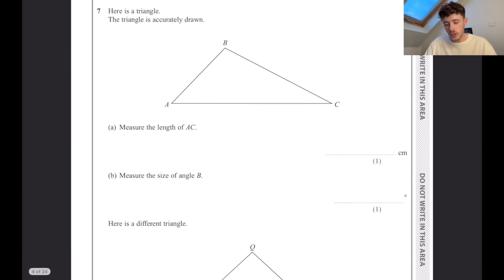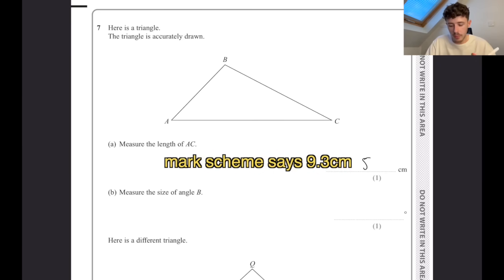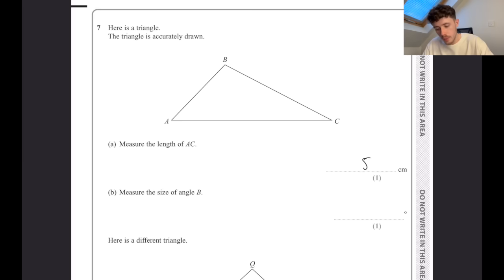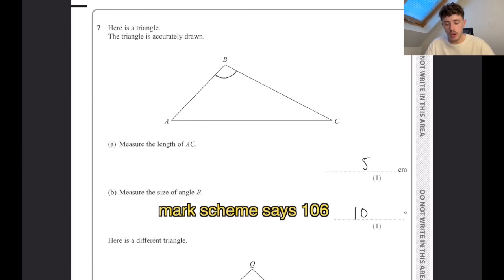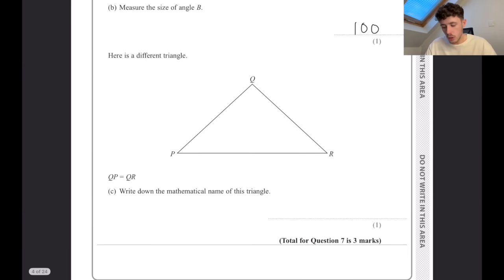We have a triangle. Measure the length of AC. Now, because this is on a screen, I do not know the exact length as it would be on A4 paper. Let's keep it simple and say it's 5 centimetres. You would just measure that with a ruler. Measure your angle at B with a protractor - I'm going to say that's about 100. Here is a different triangle. QP equals QR, so that one is the same as that one. When two of those sides are the same, it means that these two angles are also the same. This is an isosceles triangle.